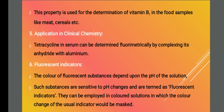The next application is the fluorescent indicator. The color of a fluorescent substance depends upon the pH of the solution. Substances that are sensitive to pH changes are termed fluorescent indicators. They are employed in colored solutions in which color changes of the usual indicator would be blocked or masked, so we use fluorescent indicators instead of normal indicators.